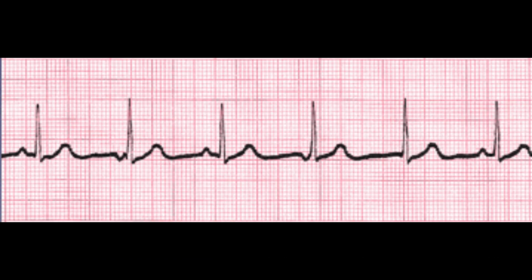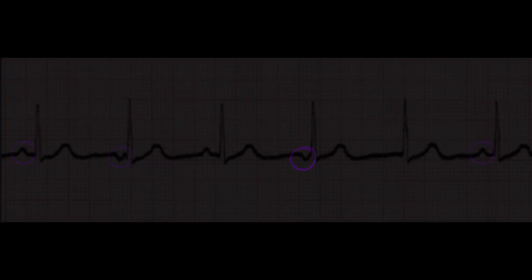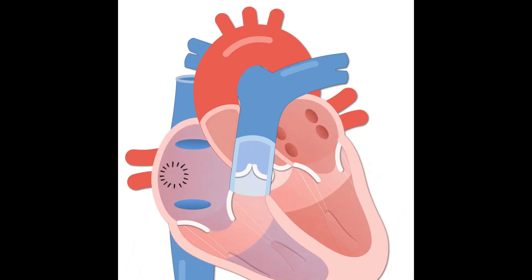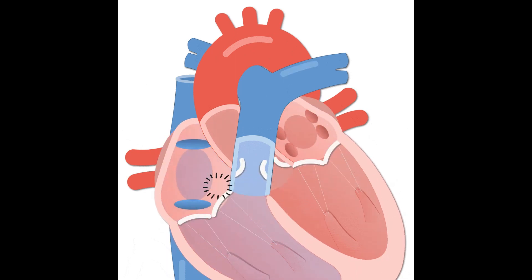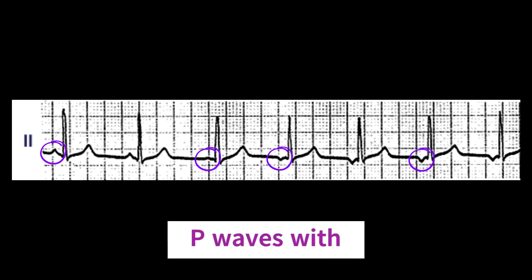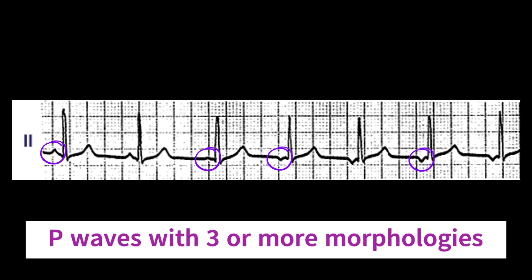In multifocal atrial rhythm or MAR, the P-waves are not uniform in shape, size, or duration. This is because they are originating from different sites in the atria. As a result, the P-waves have a multifocal appearance, meaning they vary in size and shape, and the rhythm is irregular.